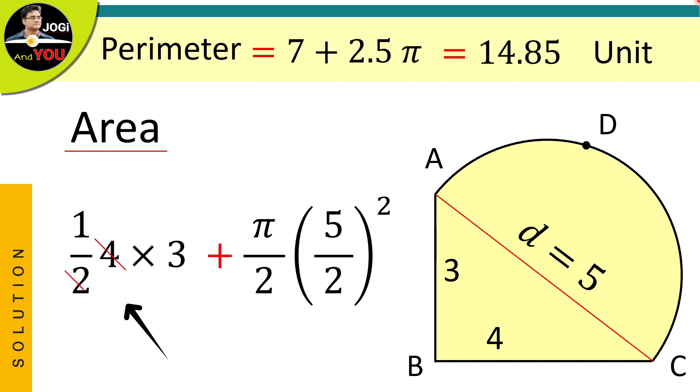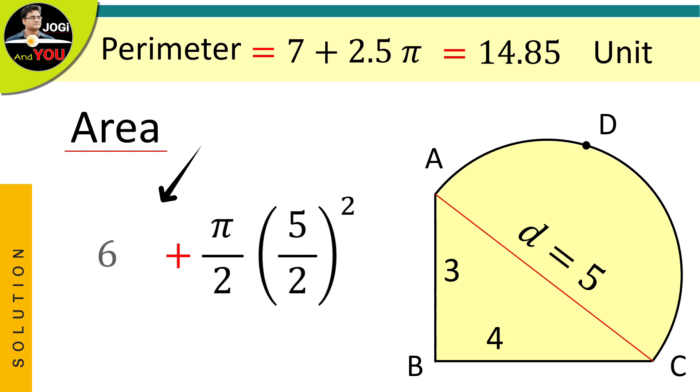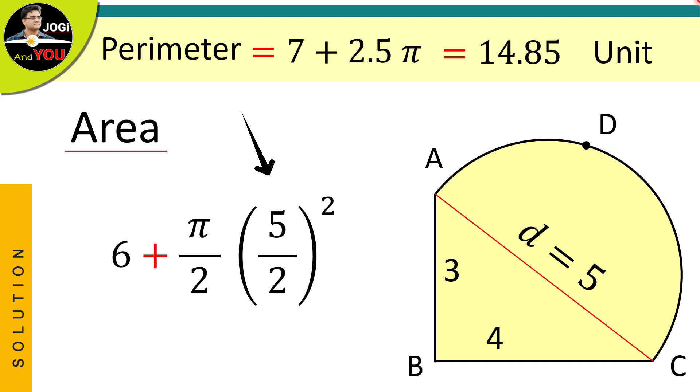4 divided by 2 means 2. So, the first part we have would be 2 times 3 which means 6. And in the second part, 5 by 2, the whole square means 25 by 4.